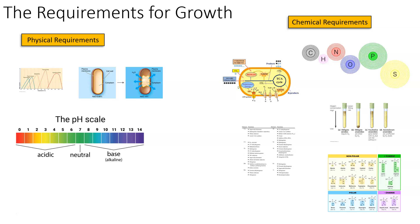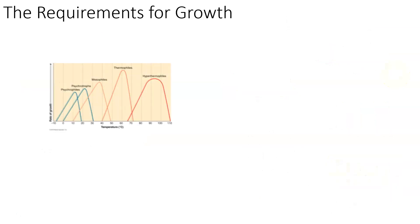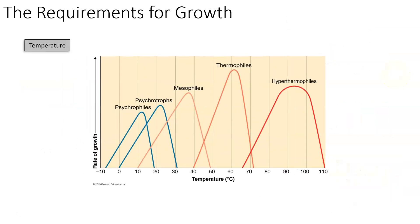In this video, we're going to focus only on the physical requirements; in the next video, we'll follow up with the chemical requirements. The first physical requirement that all bacteria need in order to grow effectively and successfully is a proper temperature range. There are a variety of different temperature ranges for different bacteria groups — psychrophiles, psychrotrophs, mesophiles, thermophiles, and hyperthermophiles.